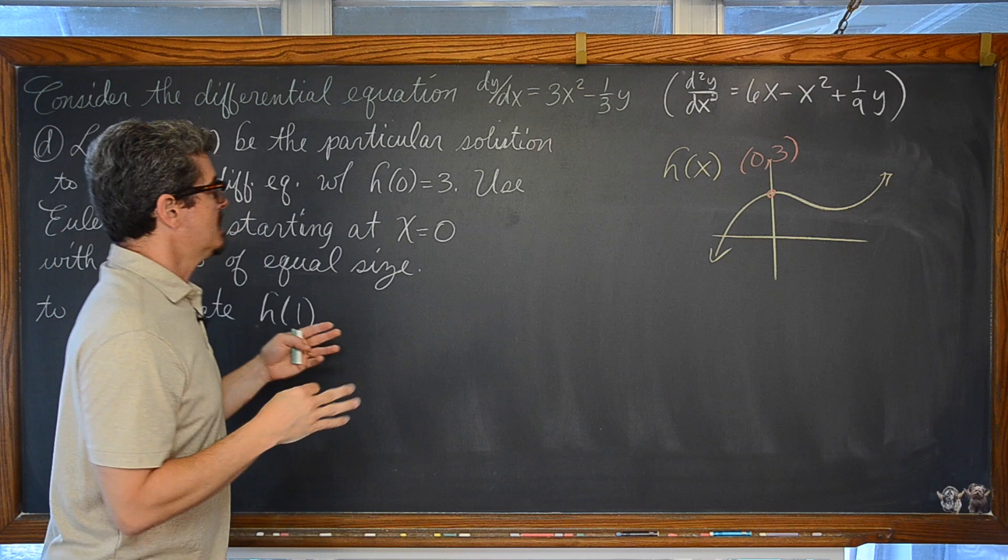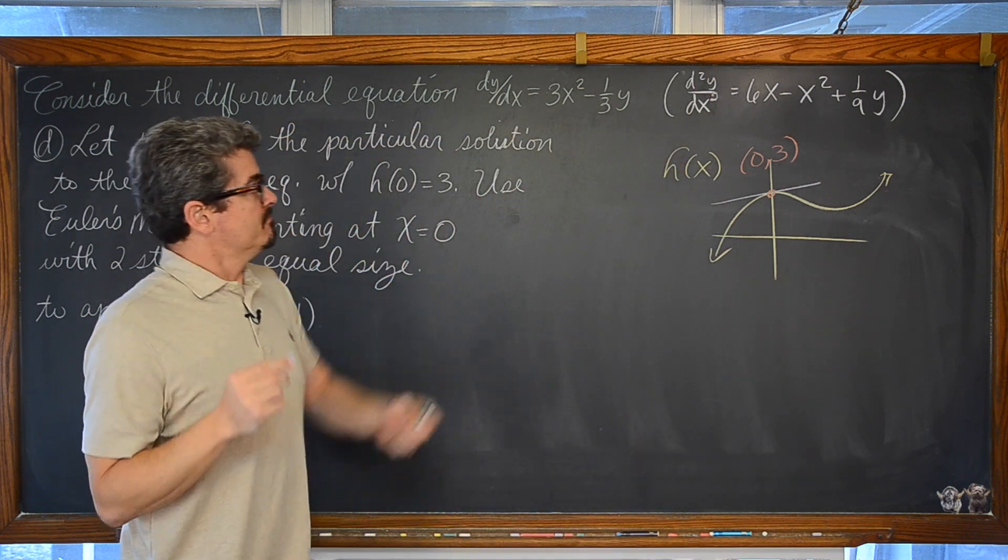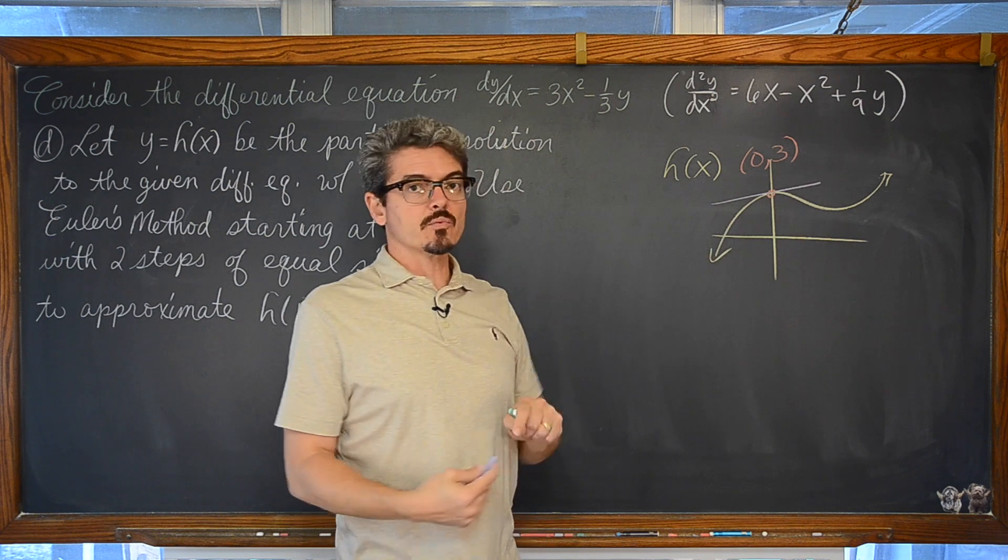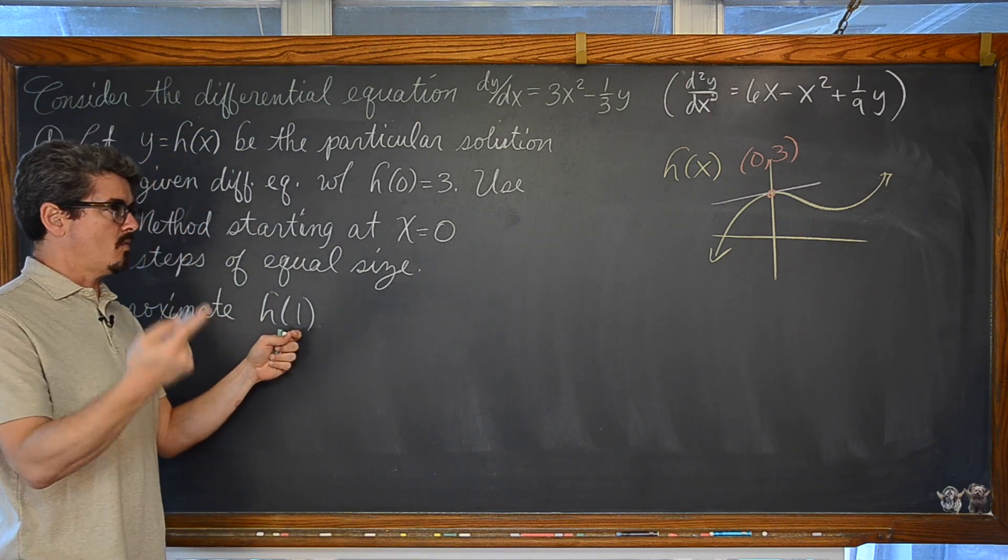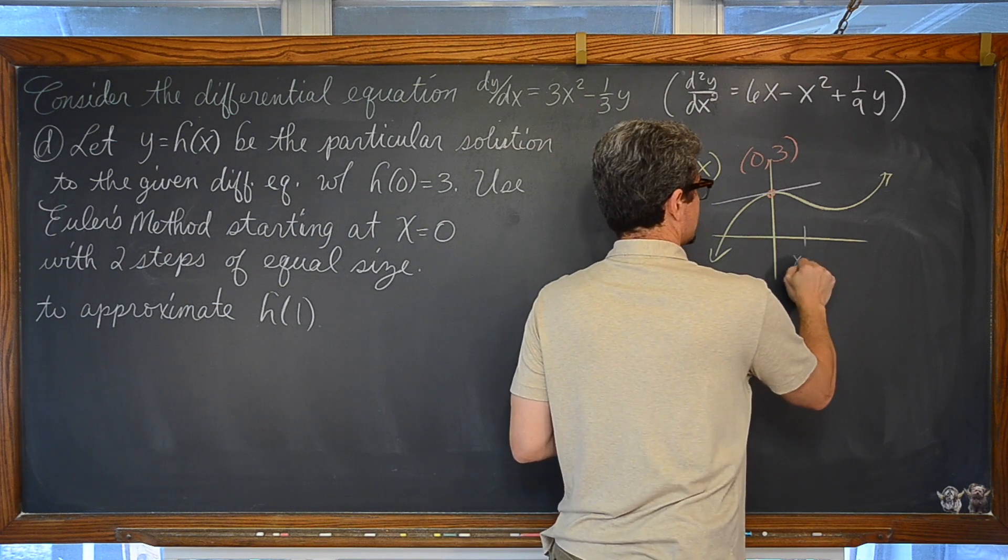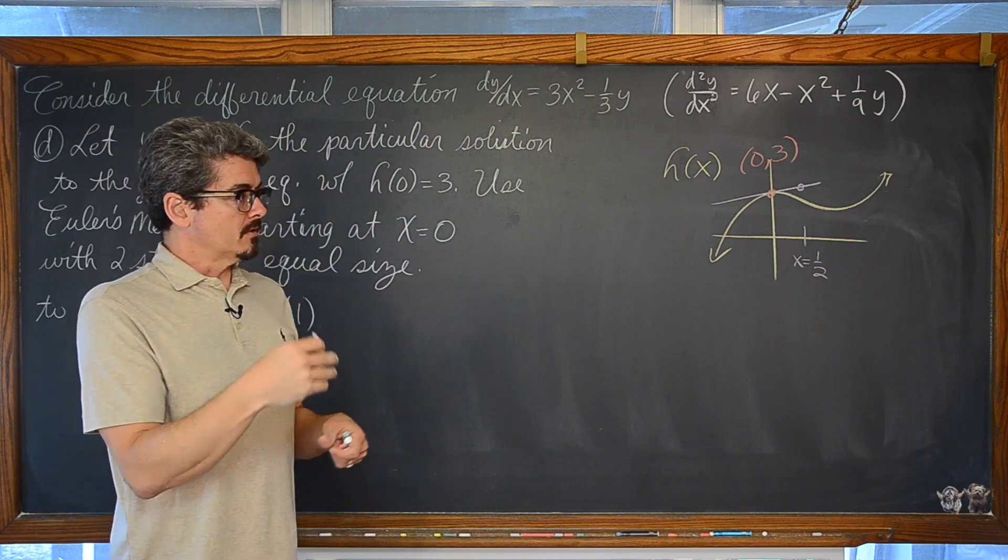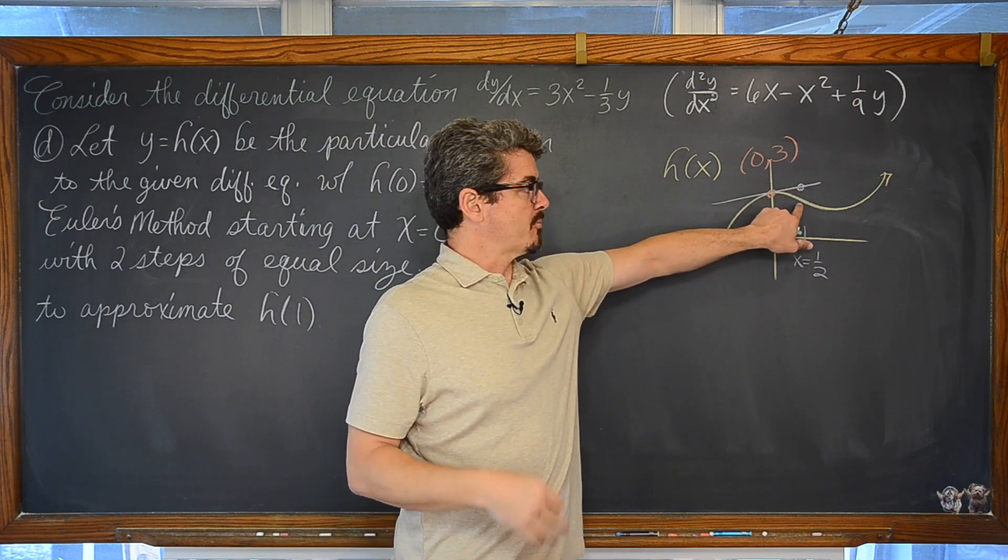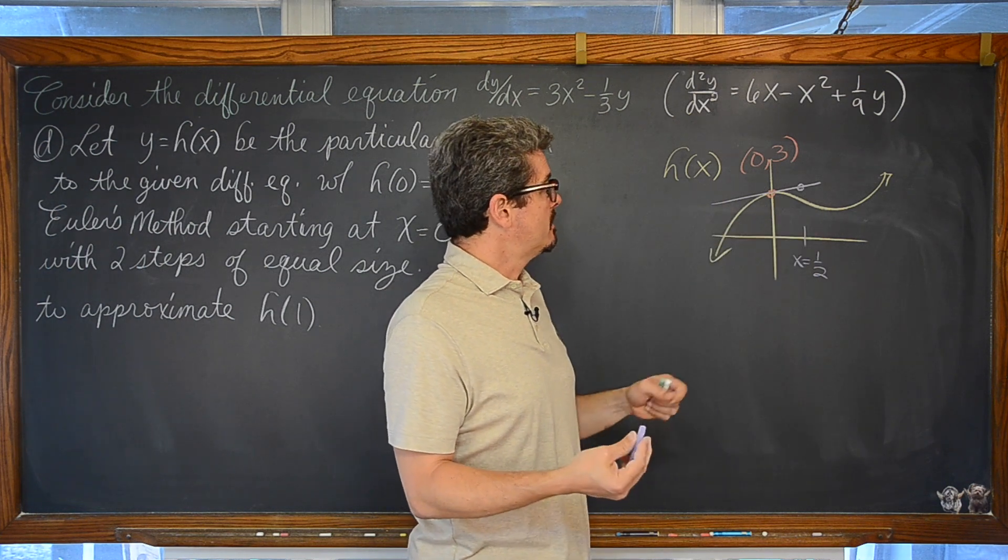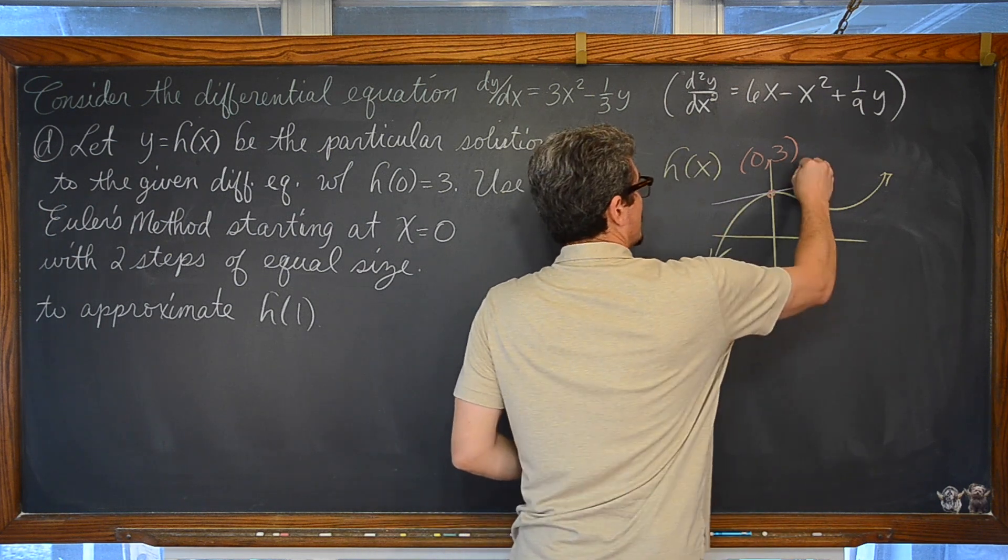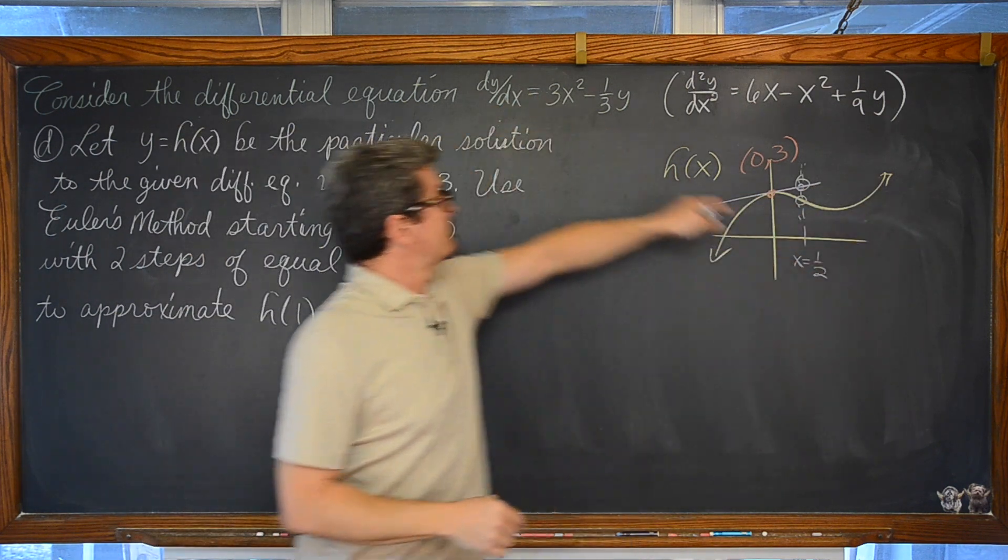But we can use tangent lines and say we are going to find this tangent line using the derivative, using the slope at (0,3), and we are going to make a small step to this point. If we are taking two equal sized steps between 0 and 1, each step is going to be 1/2. We are going to move over to the x value of 1/2 and just find out where the tangent line is at that point, or at that x coordinate of 1/2, and let the tangent line approximate the value of the actual function h.